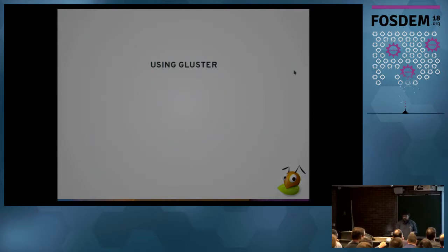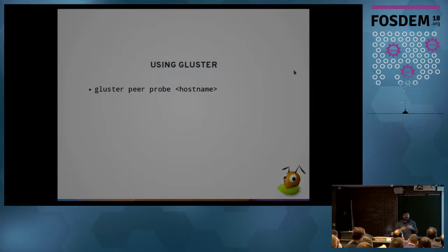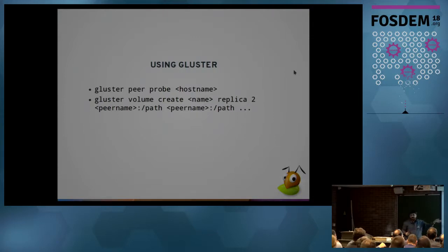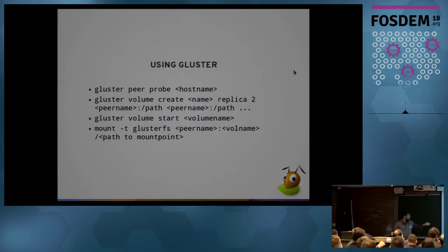So how do you use GlusterFS? Using GlusterFS is really simple. Once you have installed GlusterFS server packages on your servers, you form the trusted storage pool using the peer probe command — this lets each GlusterFS server know about the others. Then you create a volume using the gluster volume create command, giving a name, specifying the redundancy or erasure-coded parameters, and a list of bricks. Then you start the volume. From the clients, you mount it with a simple mount command. So you have just four steps to create a usable GlusterFS volume.